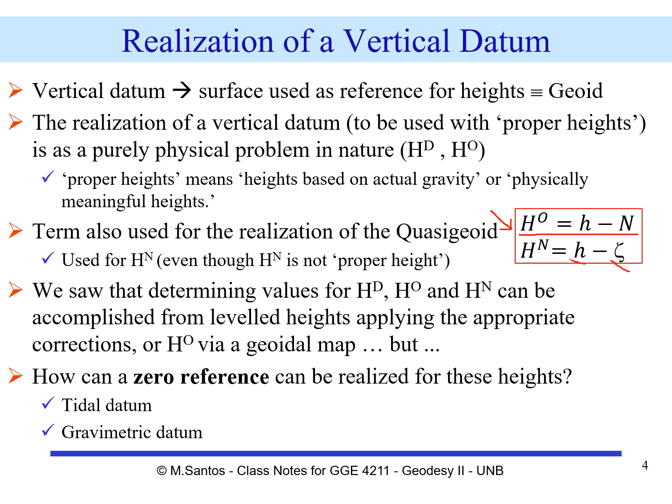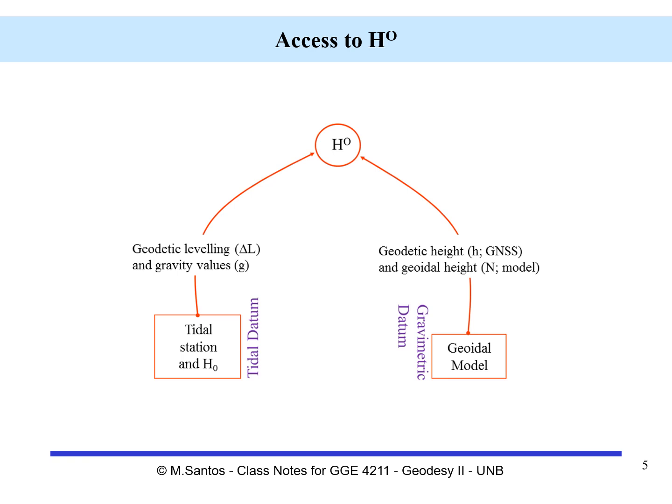We saw that the determination of values for the dynamic height, the orthometric height, and the normal height can be accomplished from leveled heights applying the appropriate correction, or by deriving orthometric height directly from a geoidal map. The whole question is: how can a zero reference be realized for these heights — by means of a tidal datum or a gravimetric datum?